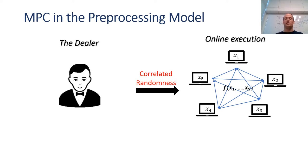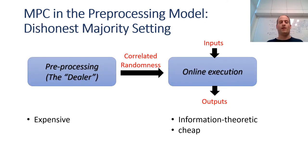Another way to look at this model is to view the execution as an execution with a trusted dealer who gives the parties correlated randomness and then later design a secure protocol to distribute the dealer. Now every MPC protocol can be modeled in this way, but this model is in particular useful in the dishonest majority setting which we consider in this work. In this challenging setting, where no one trusts no one, achieving secure multiparty computation requires using expensive tools.